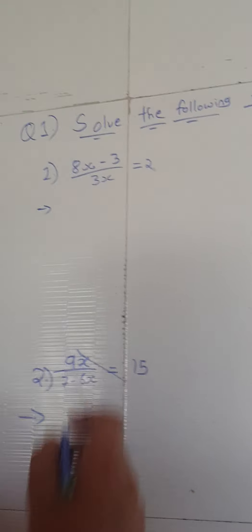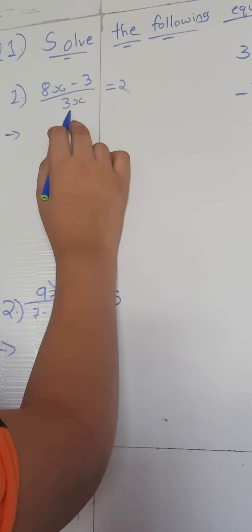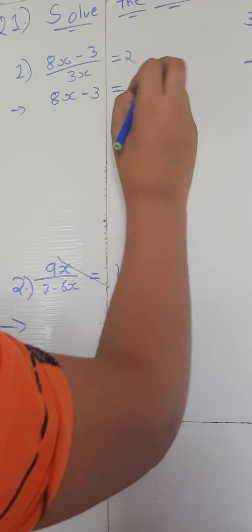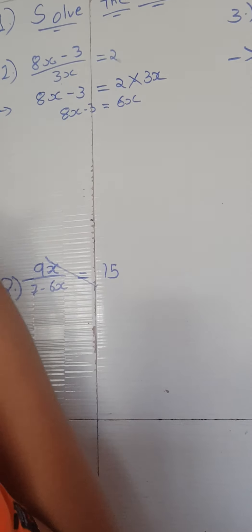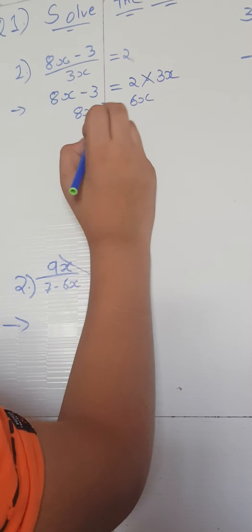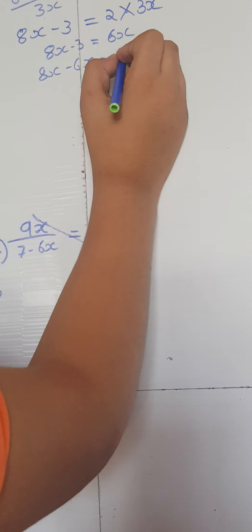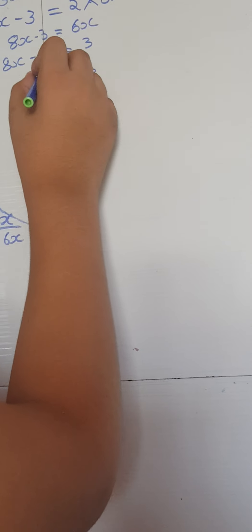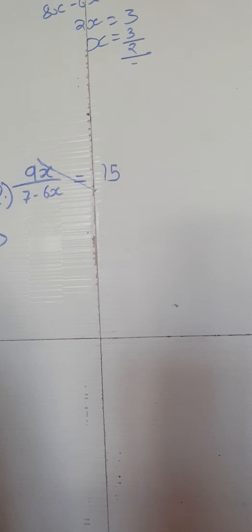Our first question is: solve the following equations. So, x upon 3 upon 3x is equal to 2. Now here we will transpose this 3, which will be 8x minus 3 is equal to 2 multiplied by 3x, which is equal to 6x. Now we will transpose minus 6x, which will give us 2x is equal to 3. So x is equal to 3 upon 2. This is our answer.